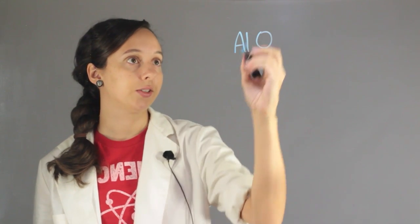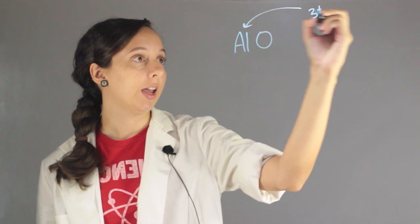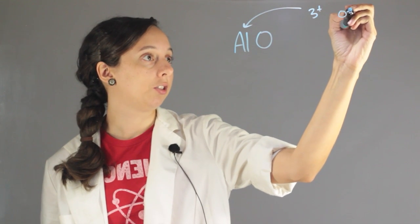Well, aluminum has a charge of three plus, and oxygen has a charge naturally of two minus.